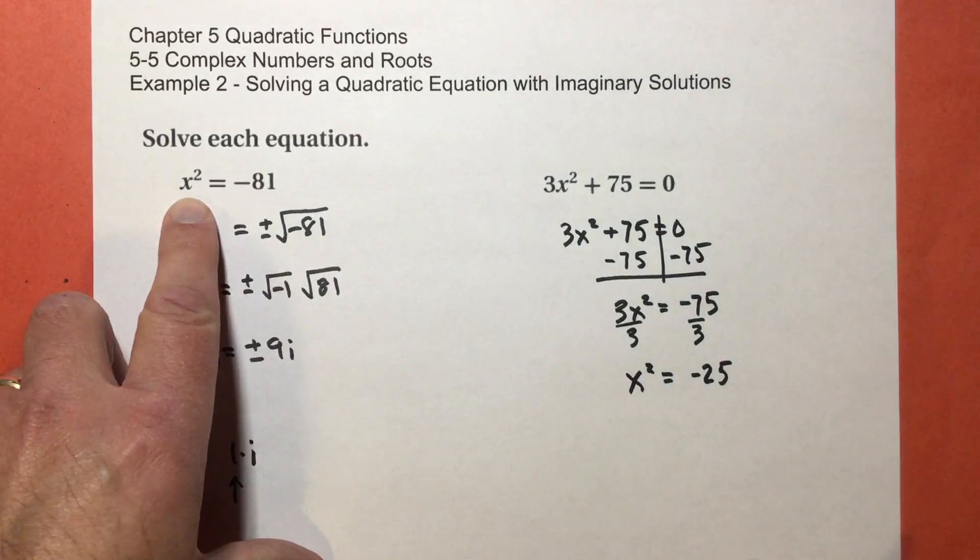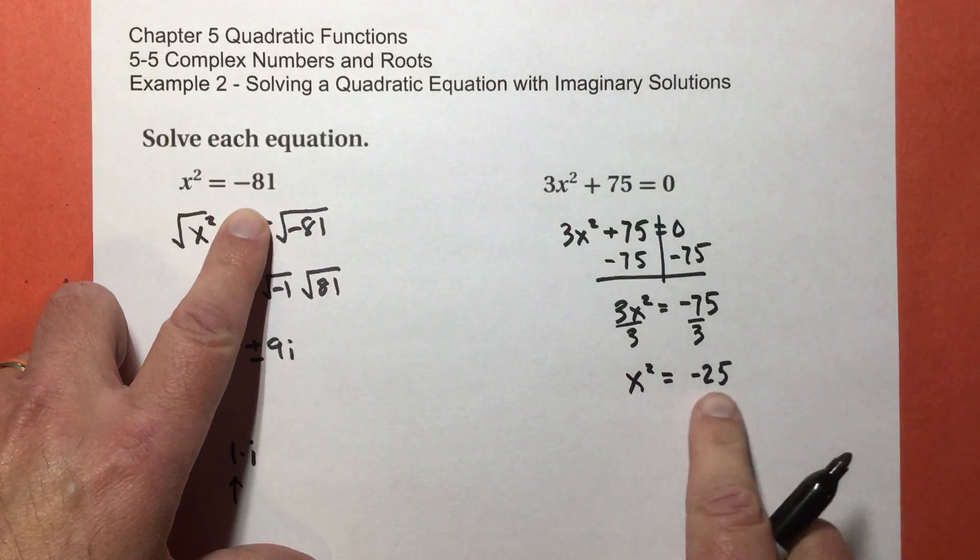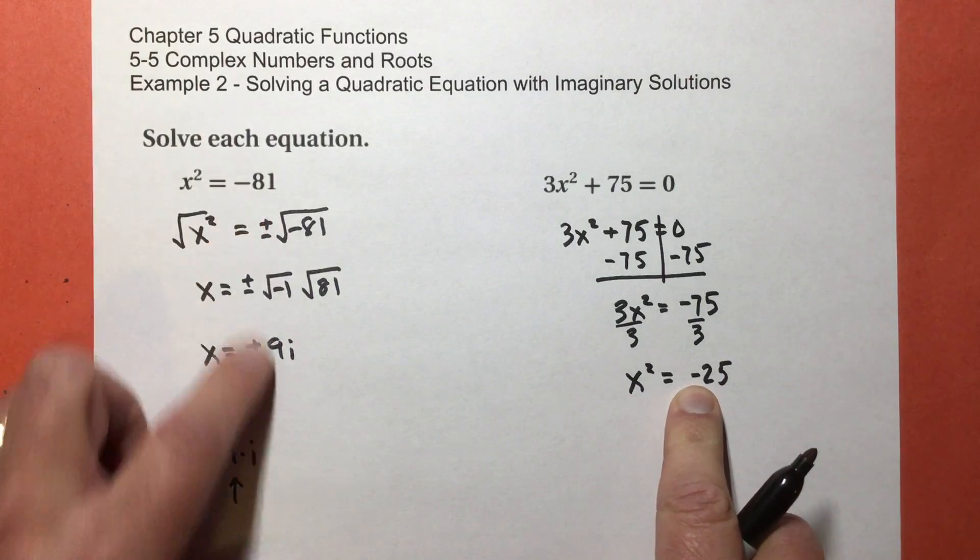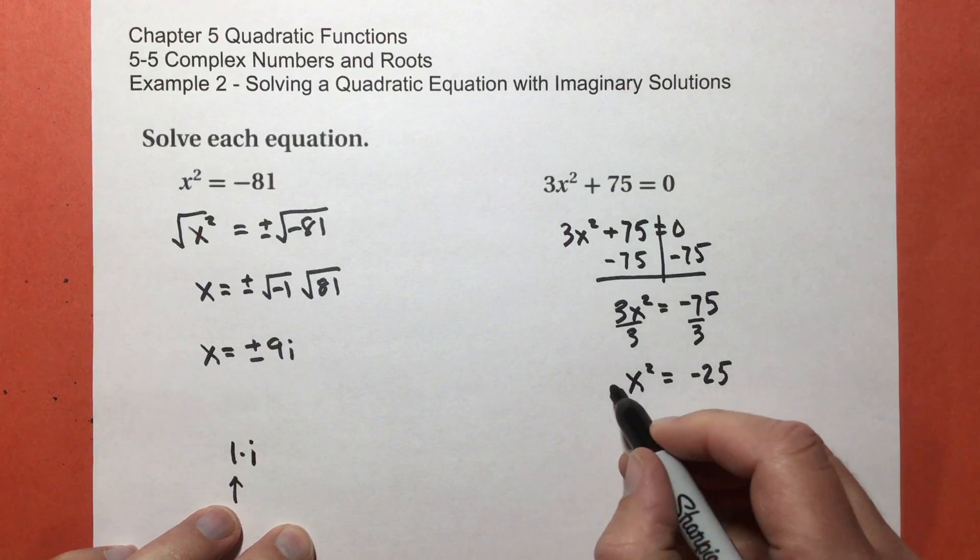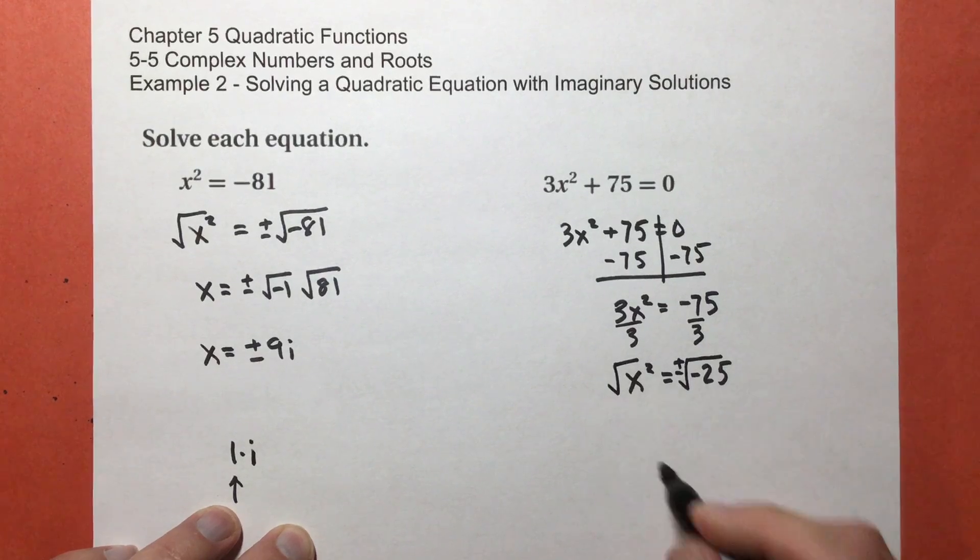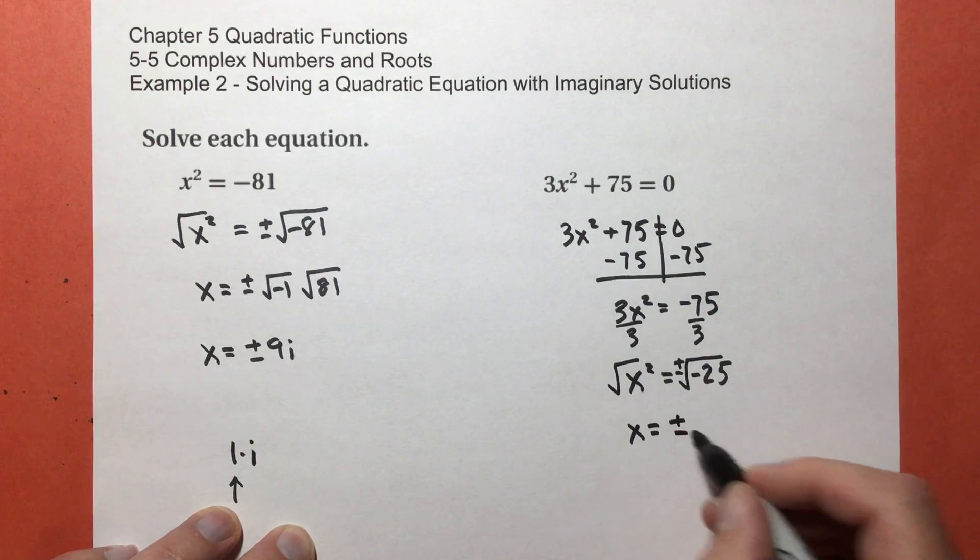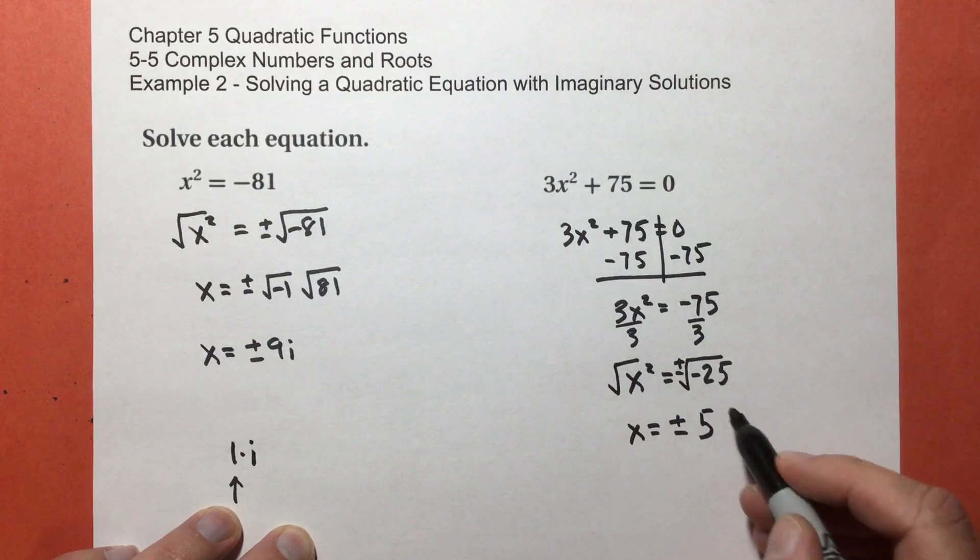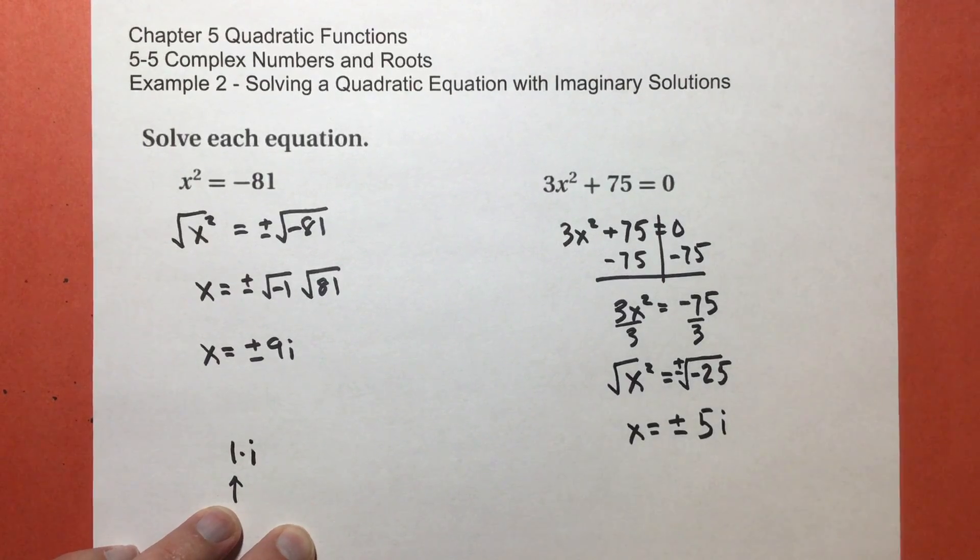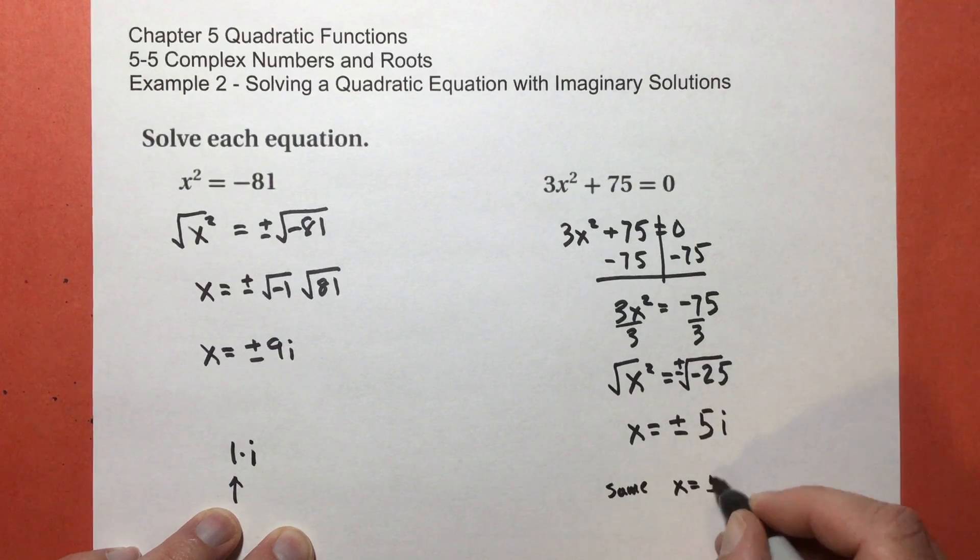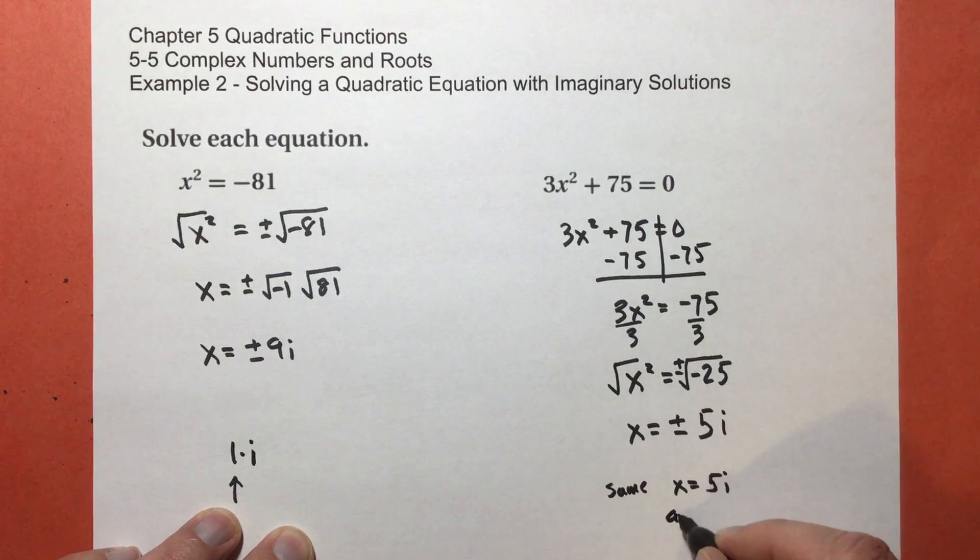So just like up here I had x² = -81, 25 is a perfect square, that's great, but -25 is not. I'm gonna take the square root. Don't forget I get two answers, one positive one negative. Square root of 25 is 5. The square root of -25 is 5i. This is the same as x = 5i and x = -5i.